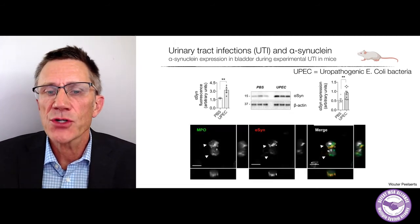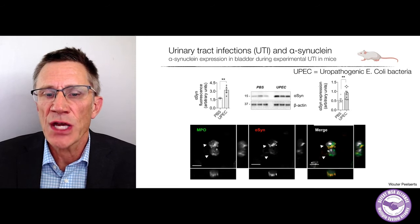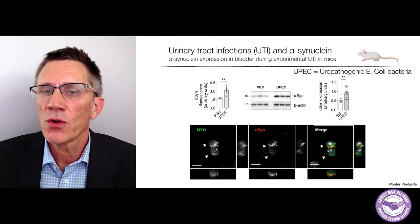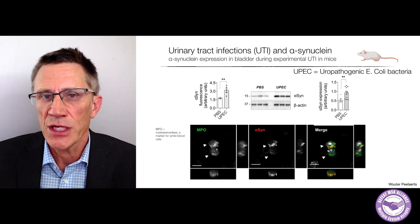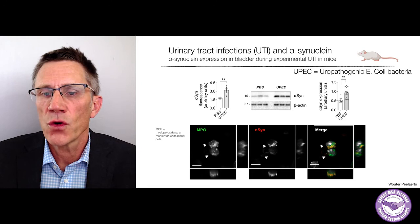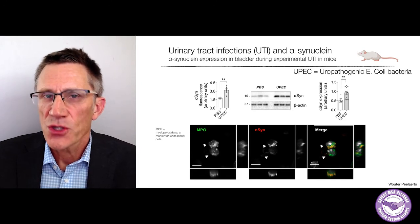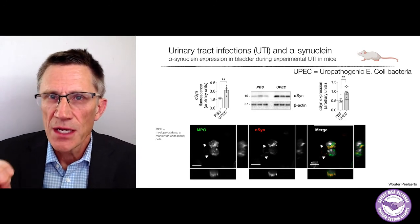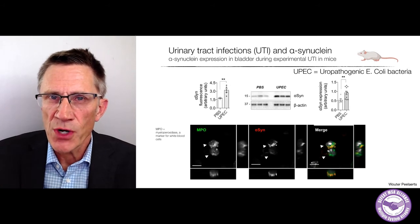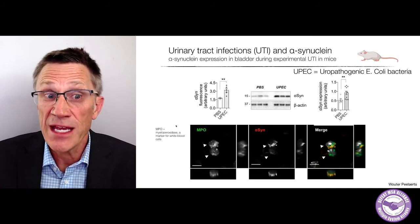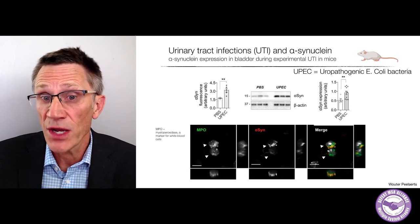When we look in a microscope, we see that some of this alpha-synuclein is in the same location as myeloperoxidase, which is a marker for white blood cells. So alpha-synuclein — traditionally viewed as a protein that works in nerve cells — is clearly present here in white blood cells.